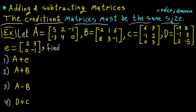Size, order, and dimension all have the same meaning. The size of a matrix is the number of rows by the number of columns. For example, here we have two rows and three columns, so we write two by three. That is the size, order, or dimension — they all mean the same thing.